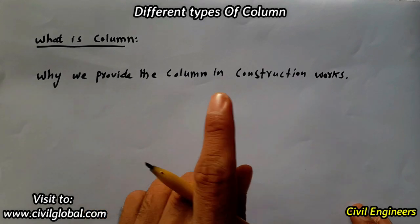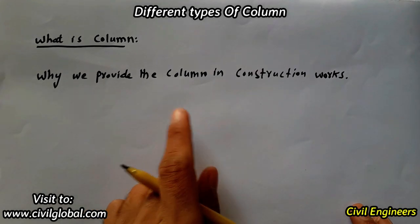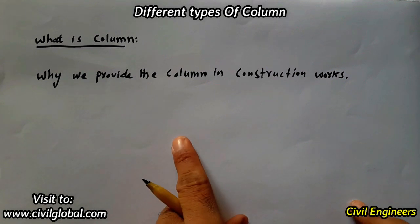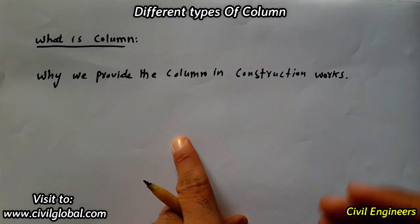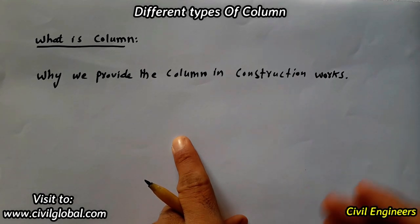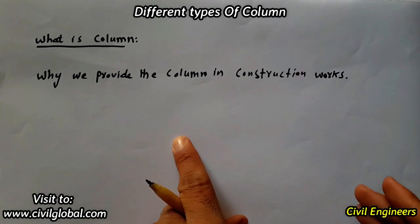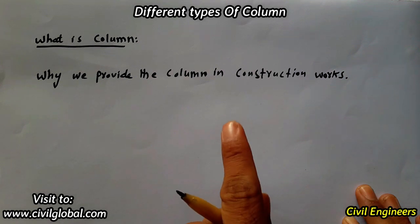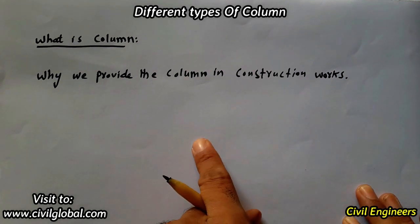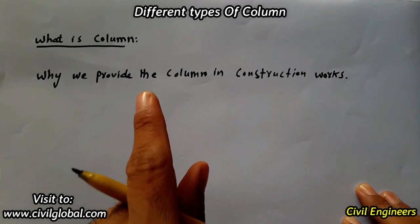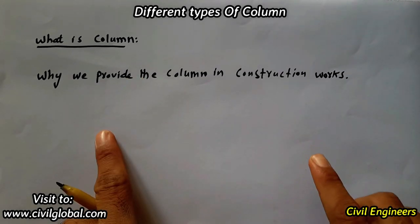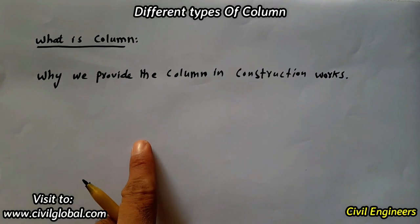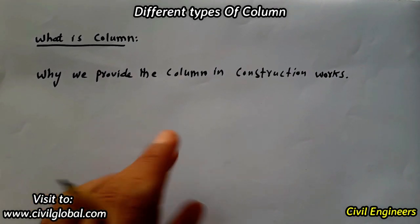Columns in bridges are designed for horizontal loads because horizontal loads are always acting on the column — such as wind load or load coming from moving vehicles on the bridge. That moving load is a horizontal load, so we design columns in bridges for it. The vehicle loads also produce shear force in the column, so for that resistance we provide shear reinforcement.